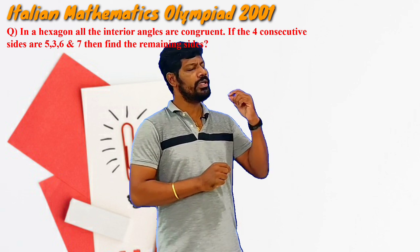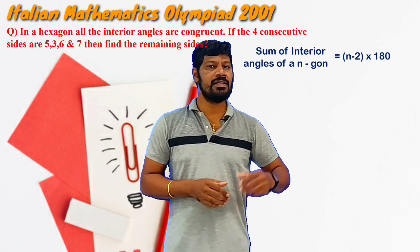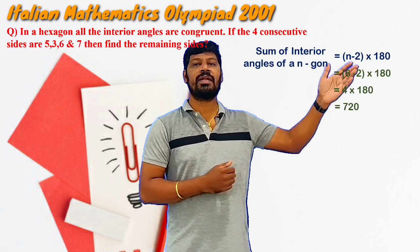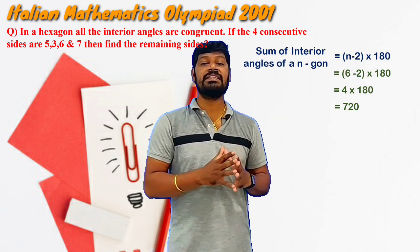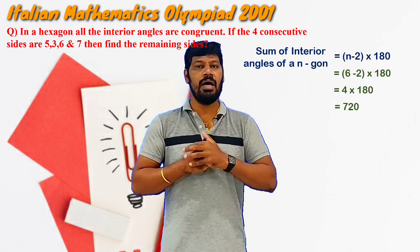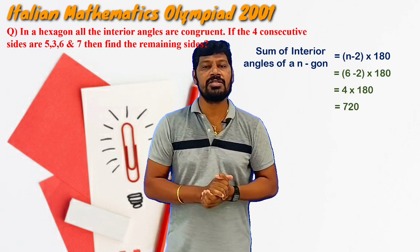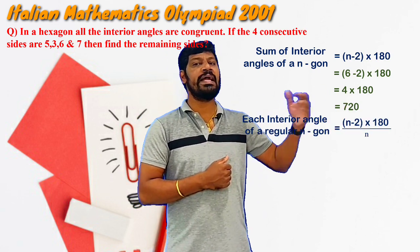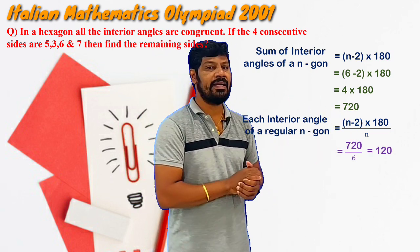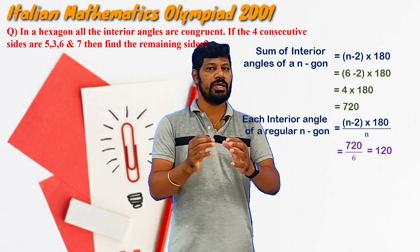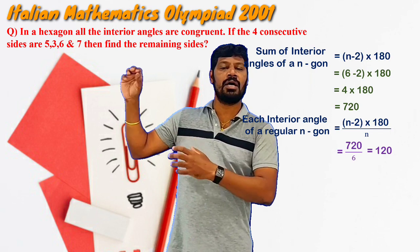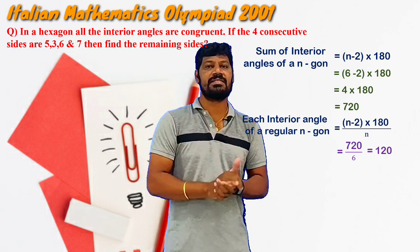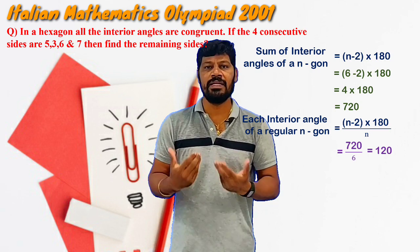Before going to the solution, we need to recall that for any n-gon, the sum of interior angles is (n−2)×180. For a hexagon, replacing n with 6: (6−2)×180 = 720 degrees is the sum of all interior angles. Since all angles are congruent to each other, each angle measure is 720÷6 = 120 degrees. So in this hexagon, each angle equals 120 degrees. They have given 4 consecutive sides 5, 3, 6, 7 and the remaining 2 sides are what we need to find.